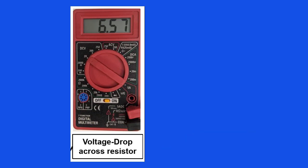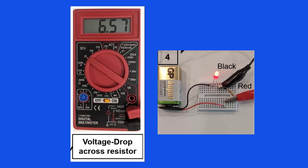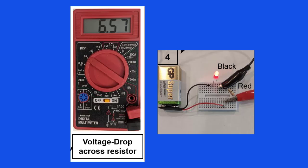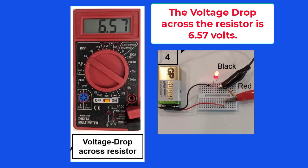Now let's measure the voltage across the resistor. What does the meter show? 6.57 volts DC. Thus, how much is the voltage drop across the resistor? 6.57 volts.